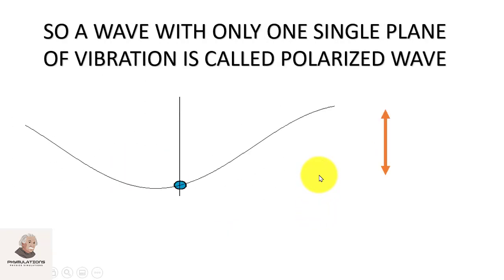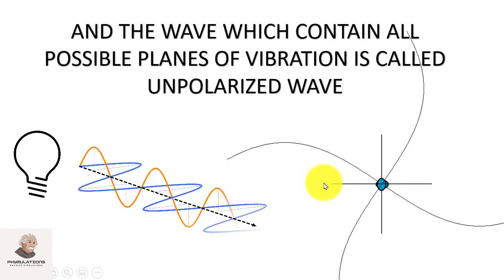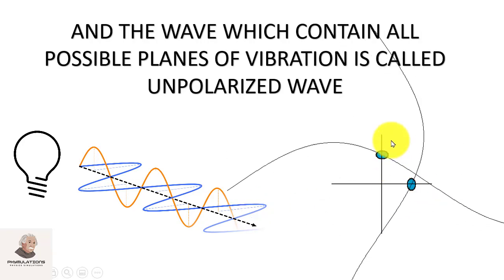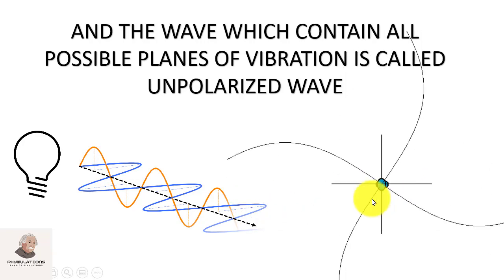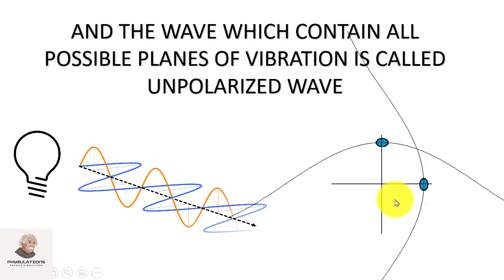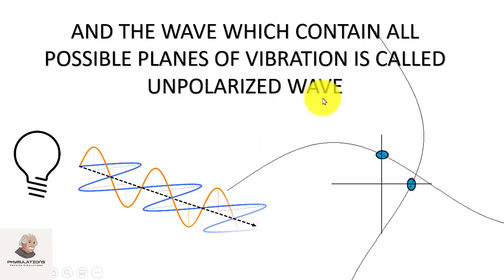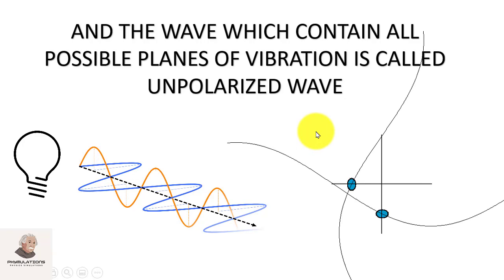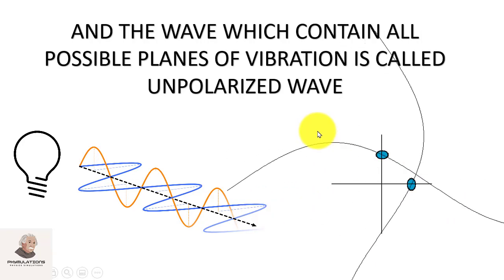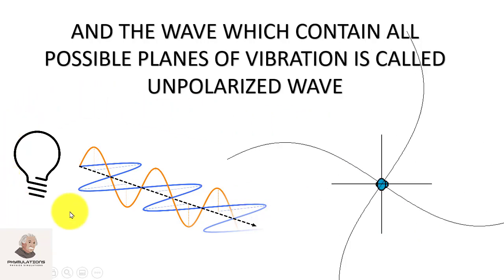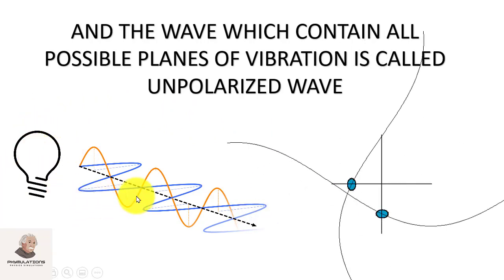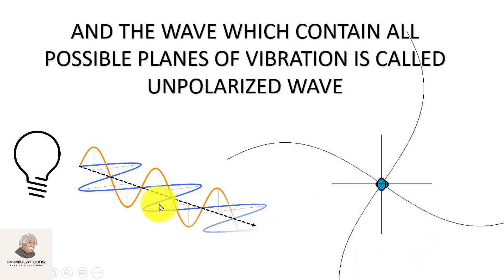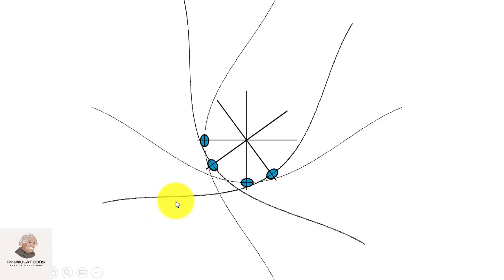Similarly, there is a horizontally polarized wave. Now, if we have more than one plane of vibration in a wave — like both vertical and horizontal components — then this is not a polarized wave. This will be an unpolarized wave or unpolarized light. A light that contains all possible planes of vibrations is an unpolarized light. For example, light from a simple incandescent bulb or energy saver is an unpolarized light, with electrons oscillating in all possible planes of vibrations.